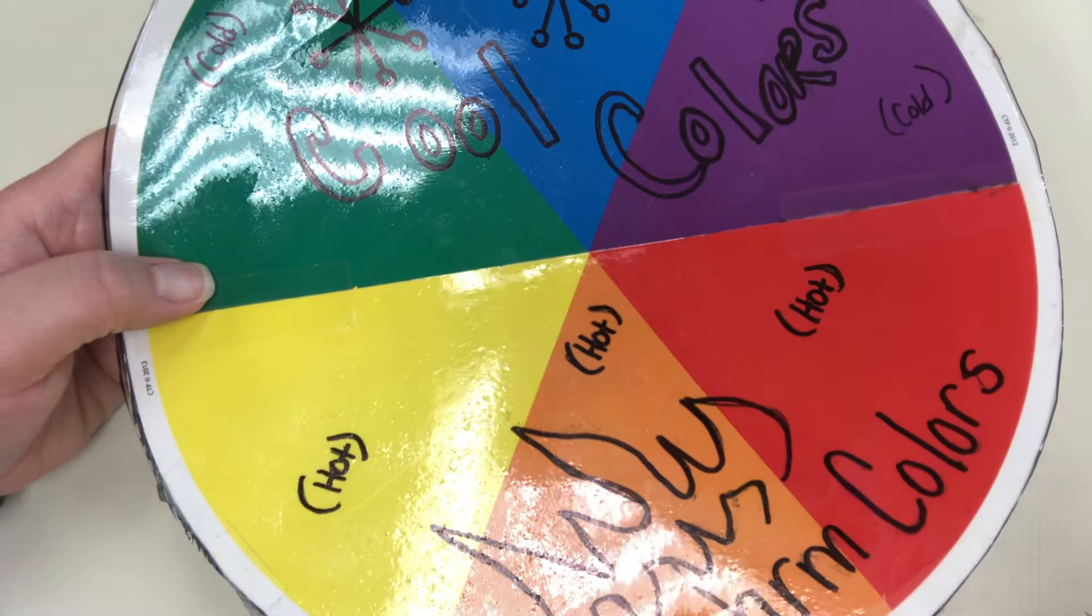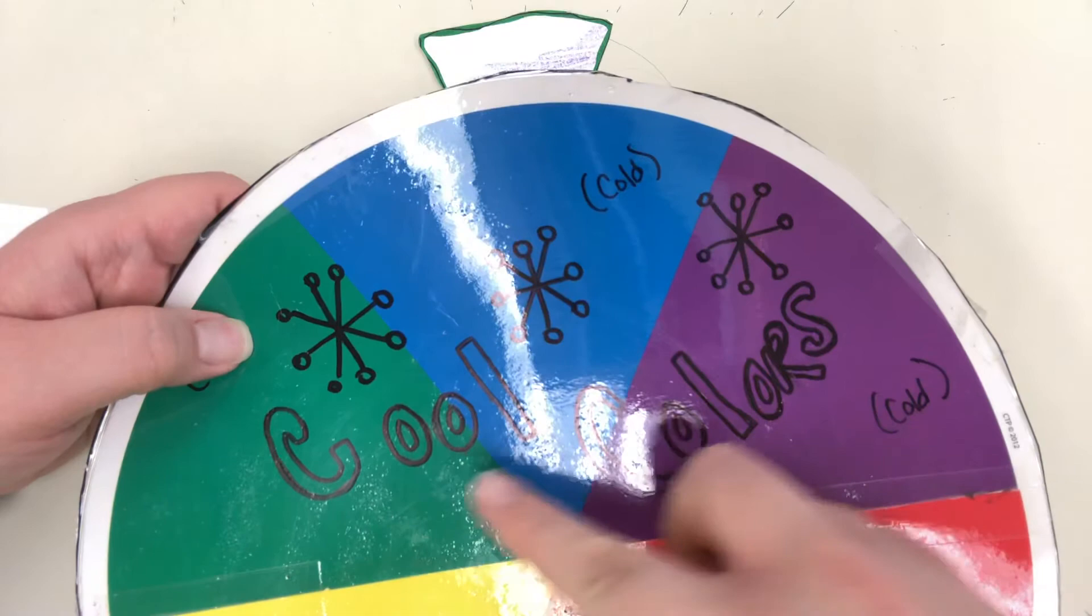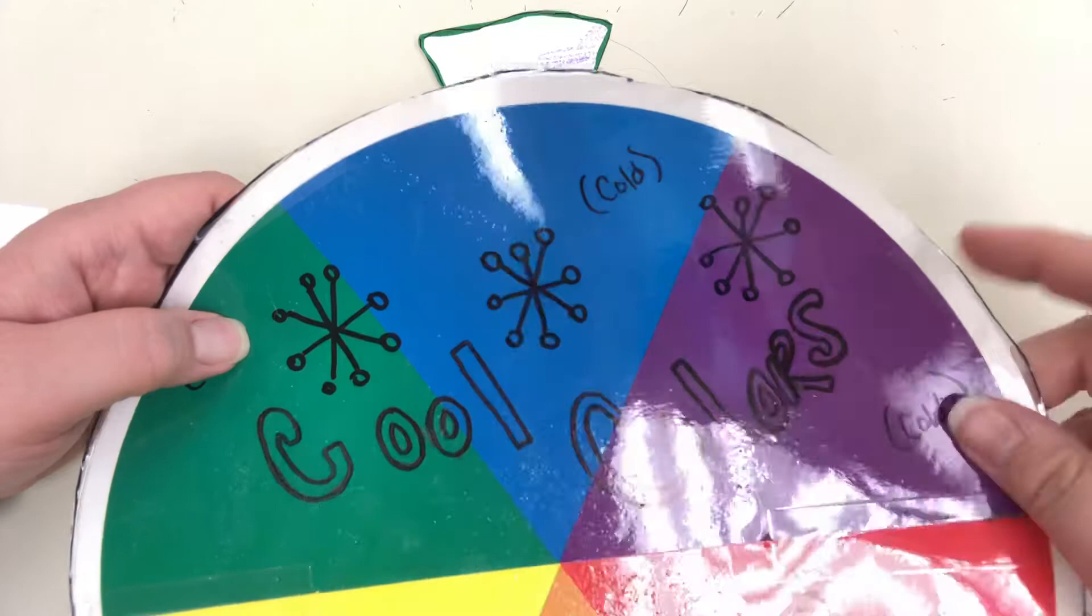And our cool colors are colors like green, blue, and purple. They look cold when you're little and we learn those we say burr cold when we touch them. Most of you have learned those color groups with me before.